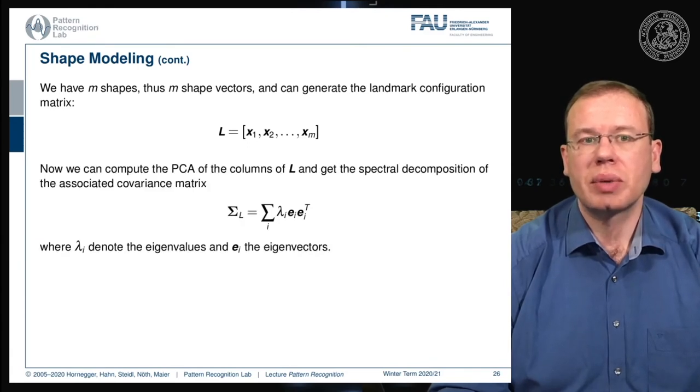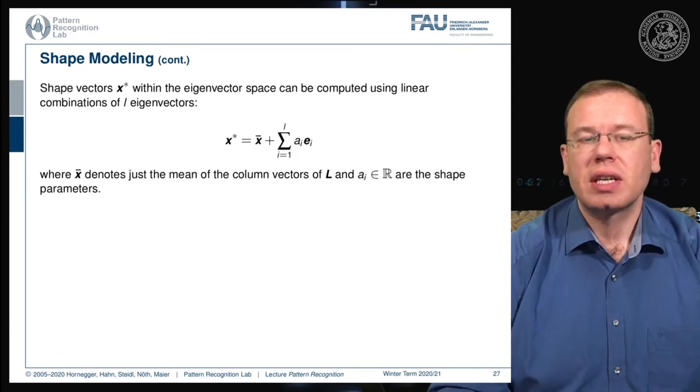This allows us to compute a PCA of L and get the spectral decomposition of the associated covariance matrix. You can see we essentially get the eigenvectors and associated eigenvalues, and if we sum them up they would give again the respective covariance matrix. This is essentially computed by using the principal component analysis.